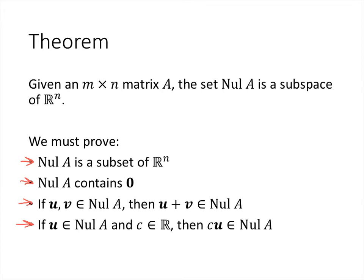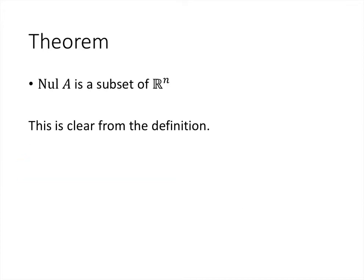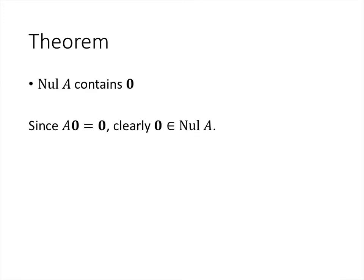First, why is the null space of A a subset of R^n? That's how it's defined — it's defined to be those vectors in R^n that have the property that A times that vector equals 0, so clearly it's a subset. Why does it contain the 0 vector? Because if we multiply A by the 0 vector, we get the 0 vector, so the 0 vector satisfies the defining property and is in the null space.